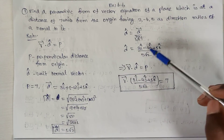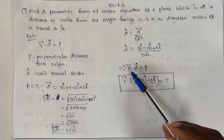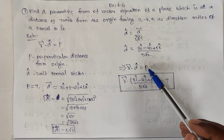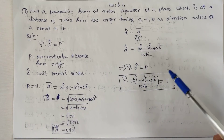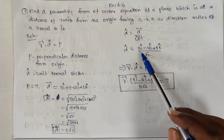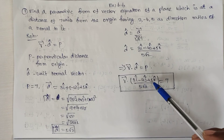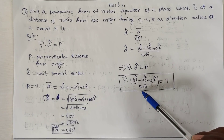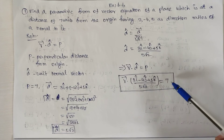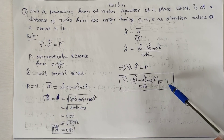We substitute these values into the vector form r⃗ · d̂ = p. So r⃗ · [(3î - 4ĵ + 5k̂) / 5√2] = 7. This is the answer for this sum. Clear?